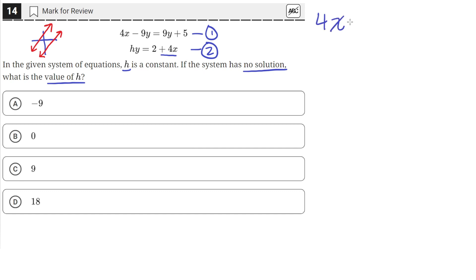So we'll have 4x minus 9y from the first equation equals 9y plus 5. So then we'll move the 4x to the other side.